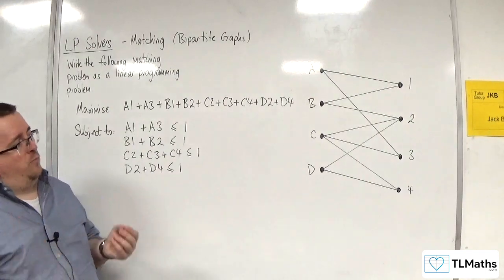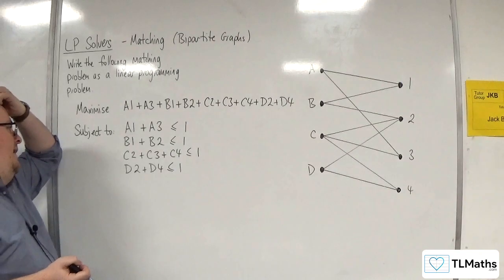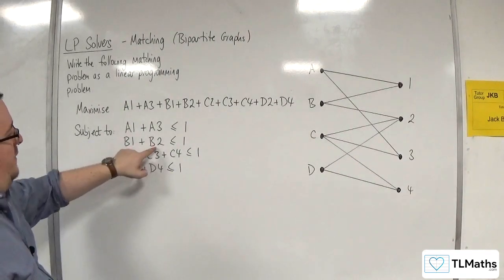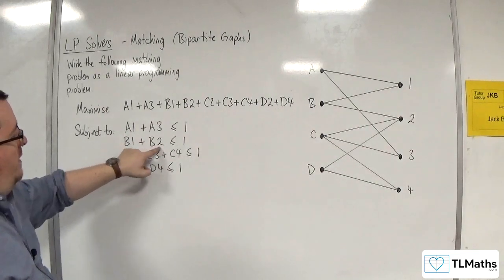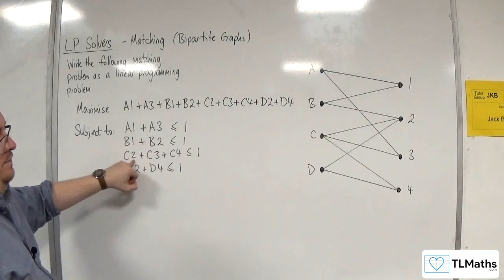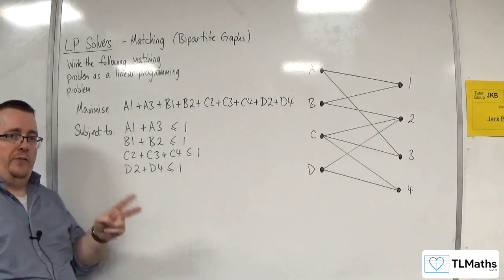However, there is a problem. We can't just stop there. Because there is no problem now with worker B, because that could be 0, 1, so B2 could be 1, and C2 could be 1. But I don't want two workers doing the same job.